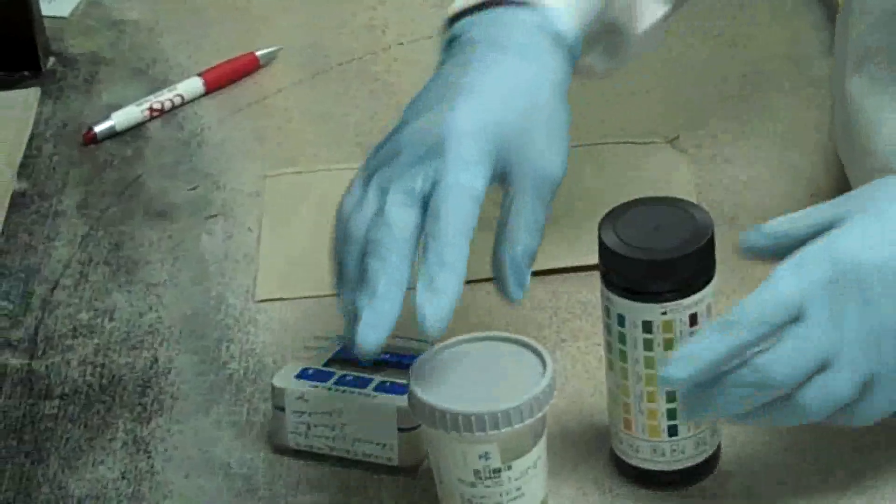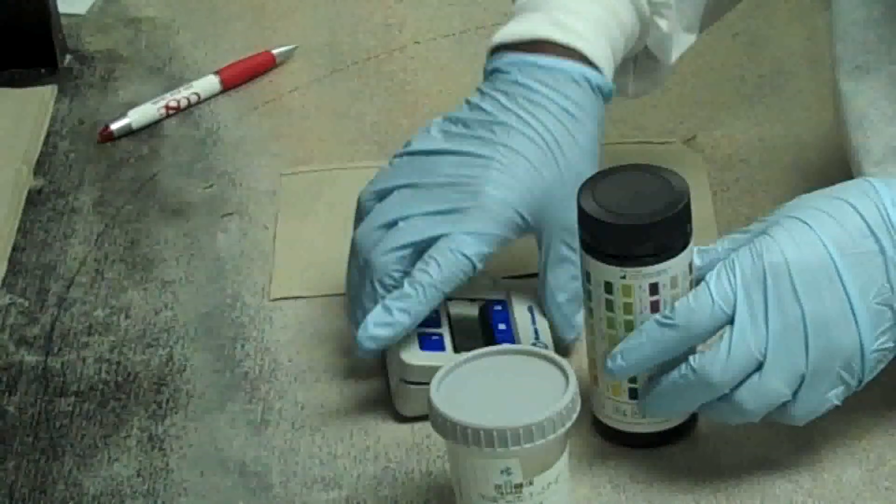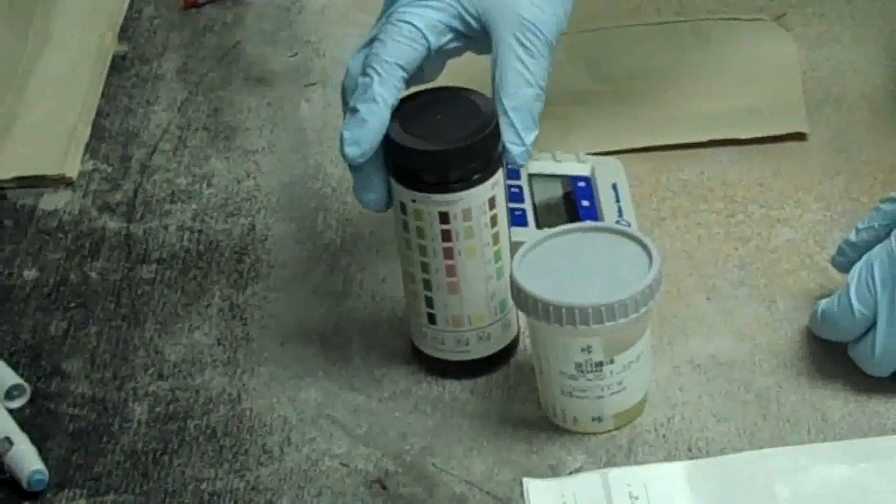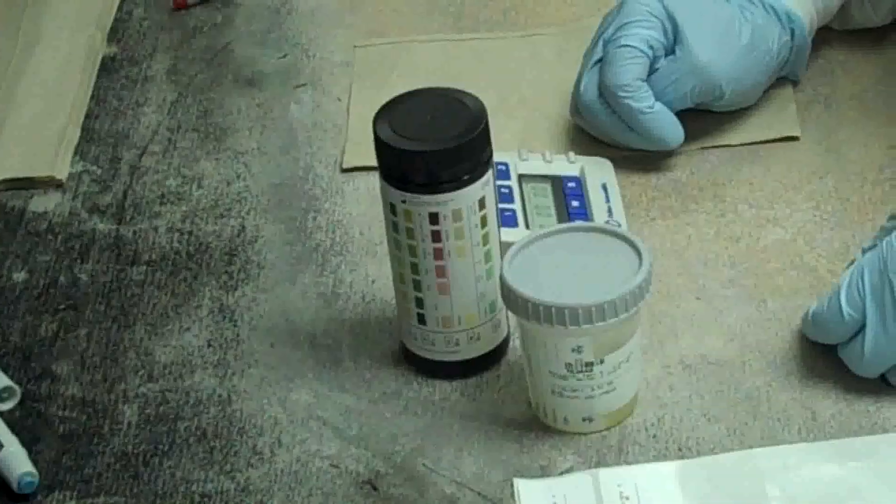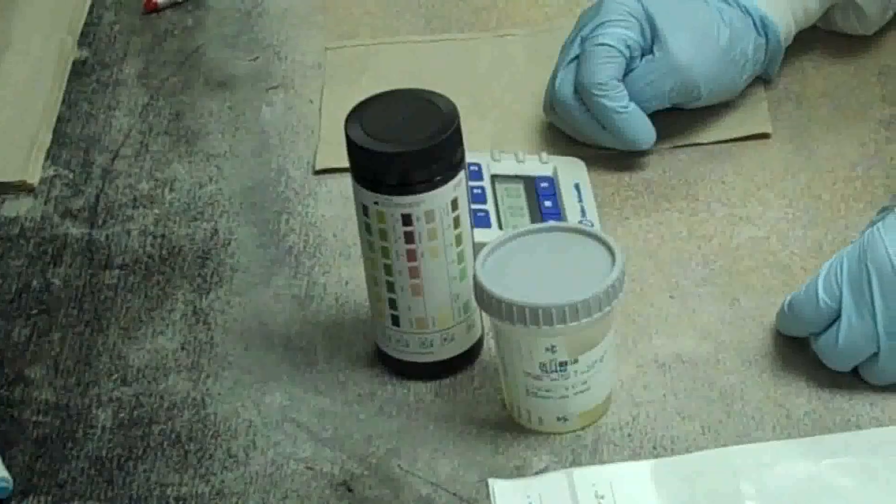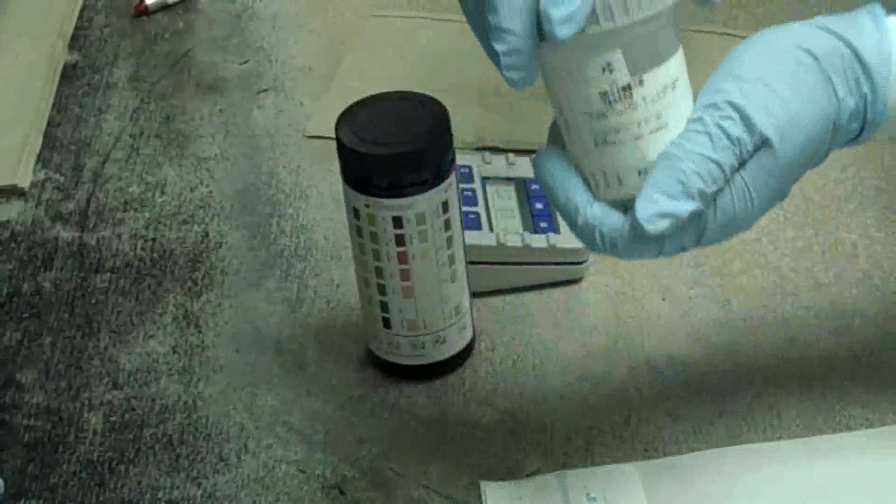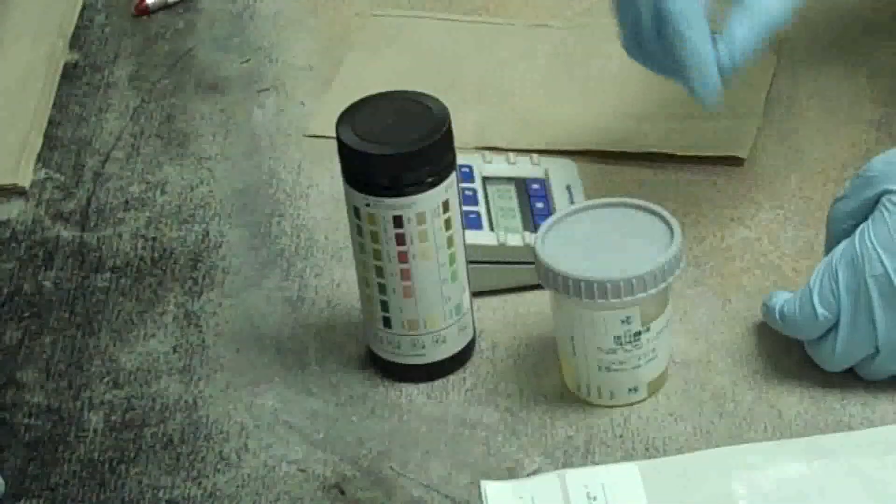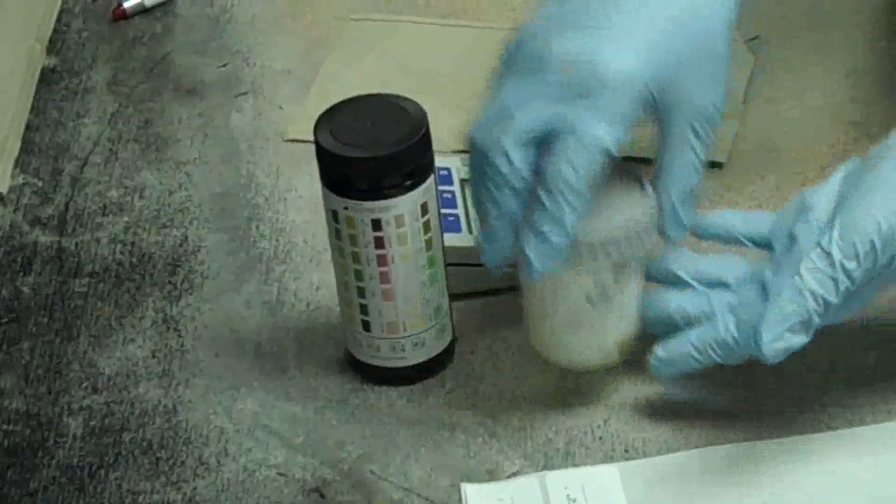Obtain a fresh urine specimen. Specimen should be at room temperature for less than two hours before testing. Collect the urine in a clean, dry, covered container. The urine specimen should be well mixed and uncentrifuged.